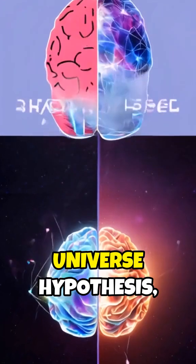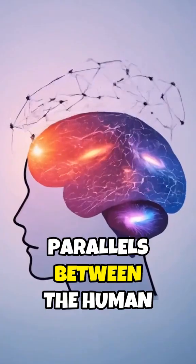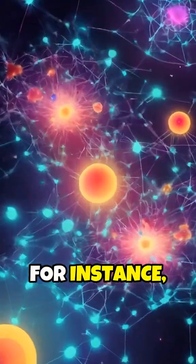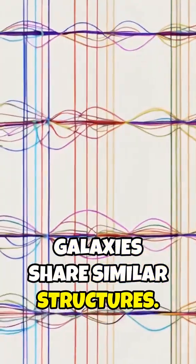Known as the brain-universe hypothesis, this theory explores astonishing parallels between the human brain and the cosmos. For instance, neurons in our brain and cosmic webs of galaxies share similar structures.